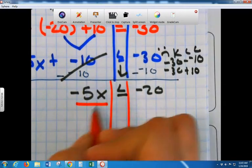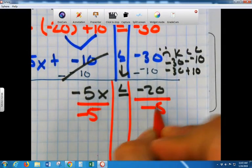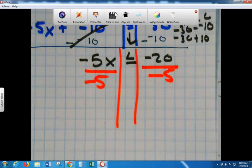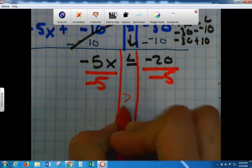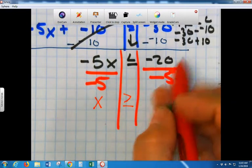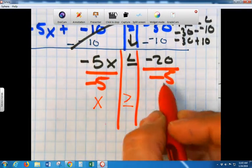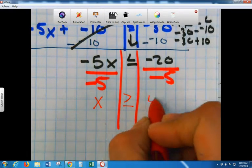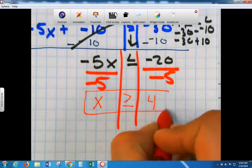Divide by negative 5. Divide by negative 5. Switch or no? Switch. Because you're dividing by a negative. And what's negative 20 divided by negative 5? 4.